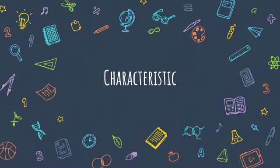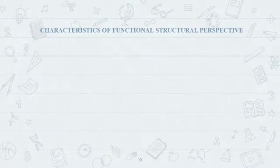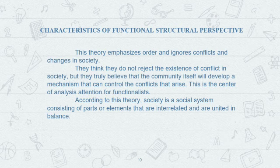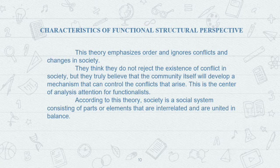The characteristics of the structural functionalist perspective: this theory emphasizes order and ignores conflict and changes in society. They do not reject the existence of conflict in society, but they truly believe that the community itself will develop a mechanism that can control conflicts that arise. According to this theory, society is a social system consisting of parts or elements that are interrelated and united in balance.